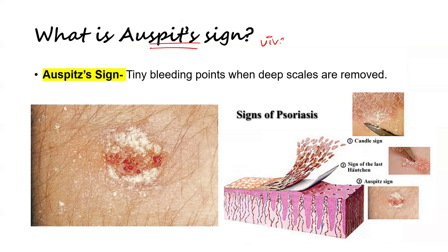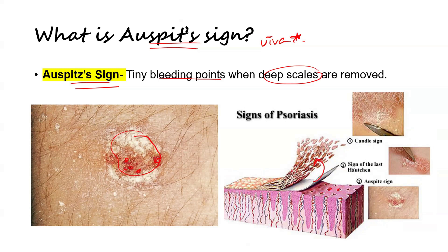An important exam question: the Auspitz sign is the tiny bleeding points that are revealed when deep scales are removed. When you remove the scales, you see these small underlying bleeding points. This occurs most commonly due to the thinning of the dermis and dilated capillaries close to the surface.